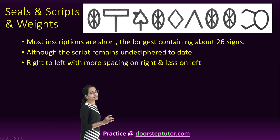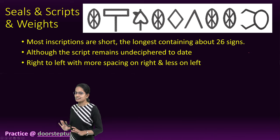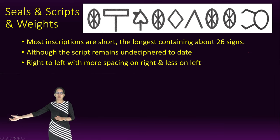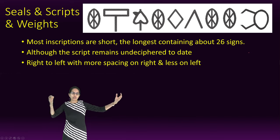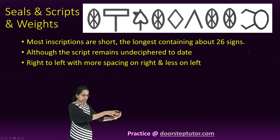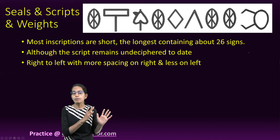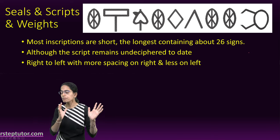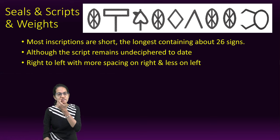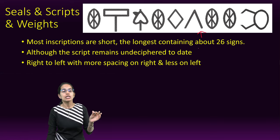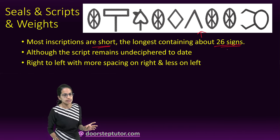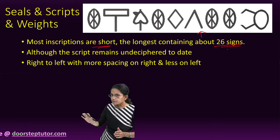The next topic is seals, scripts, and weights. Seals were used for long-distance communication — when goods were moved from one location to another, a seal was placed on the parcel. If the seal remained intact upon arrival, it indicated the goods had not been tampered with. Seals sometimes also carried the name and title of the owner. Most inscriptions were short; the longest found so far contains 26 signs, and the script has not yet been deciphered.